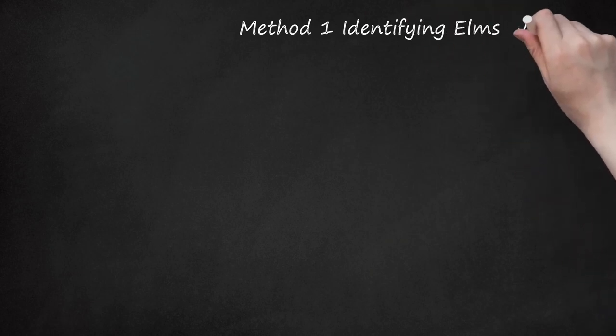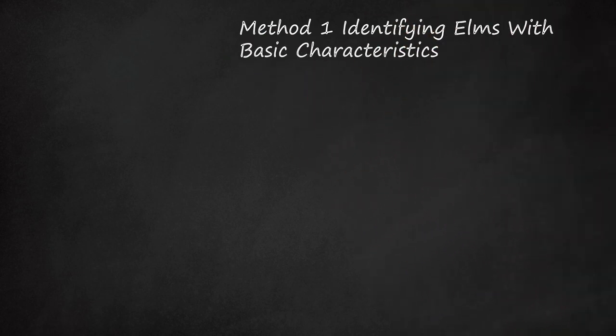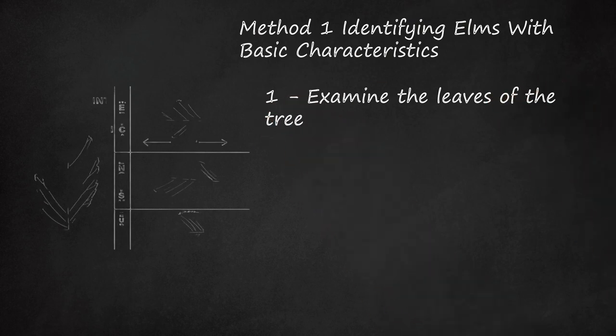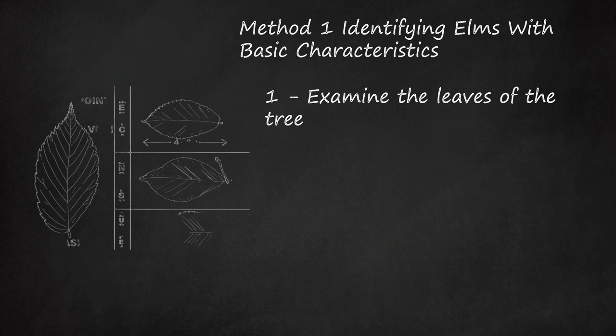Method 1: Identifying Elms with Basic Characteristics. 1. Examine the leaves of the tree. Elm leaves alternate along two sides of the stem. The leaf is oval in shape and comes to a point at the end. The edges of the leaf are jagged and the veins are prominent. The base of the leaf is slightly asymmetrical. Many varieties of elm leaves are smooth on top and fuzzy on the bottom.